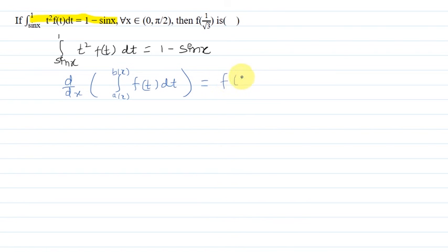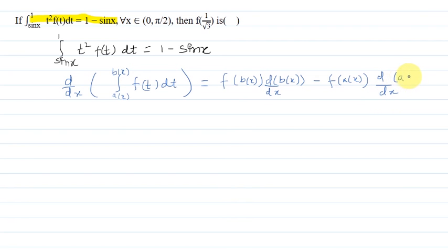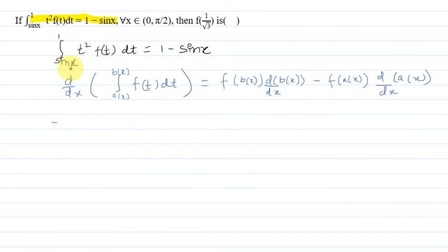To solve this, we differentiate both sides using the Leibniz rule: f(b(x))·(db/dx) minus f(a(x))·(da/dx). This helps us find the value of f(sin x).